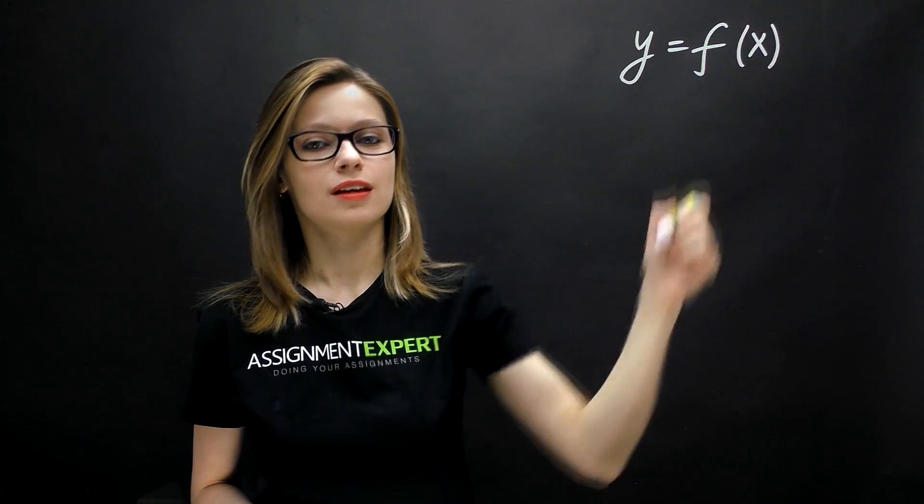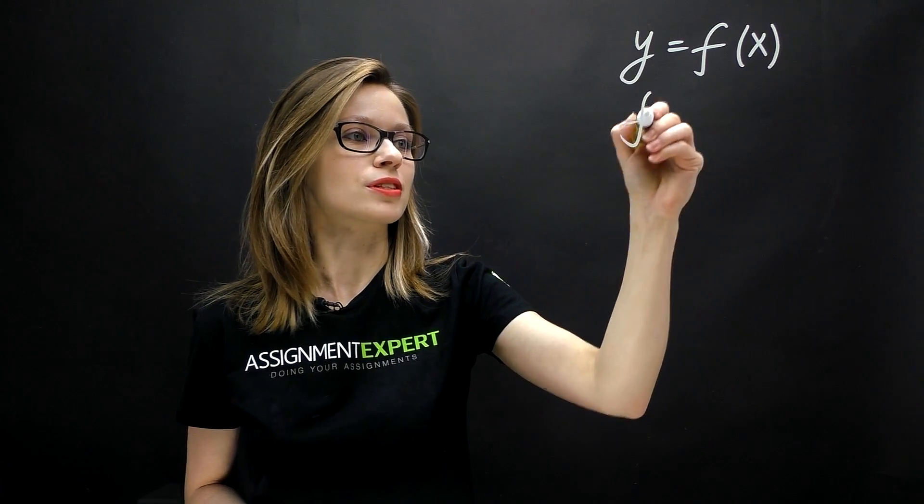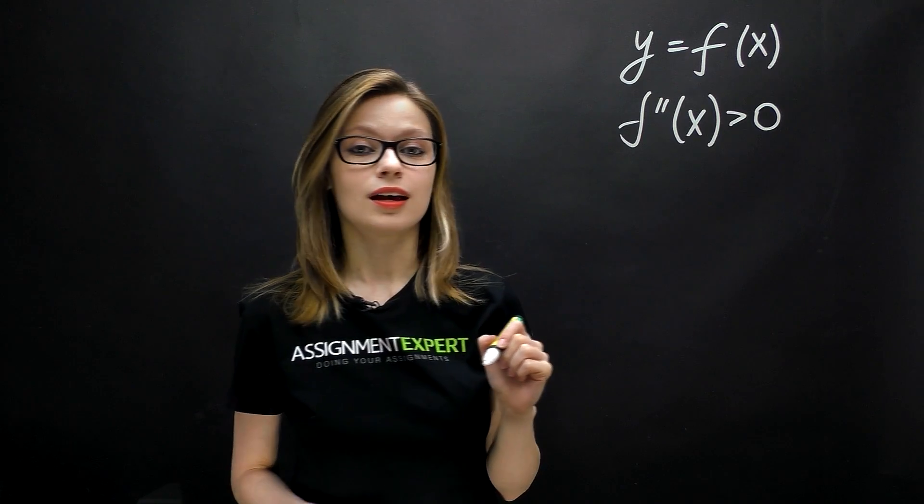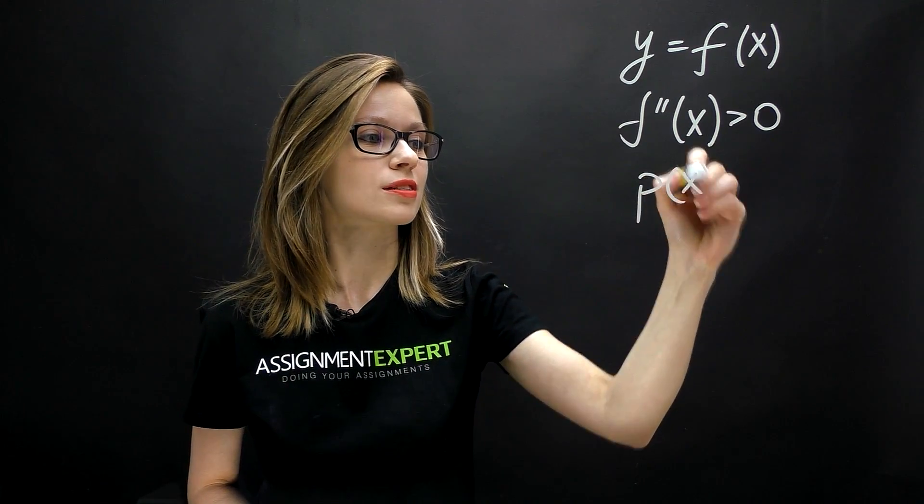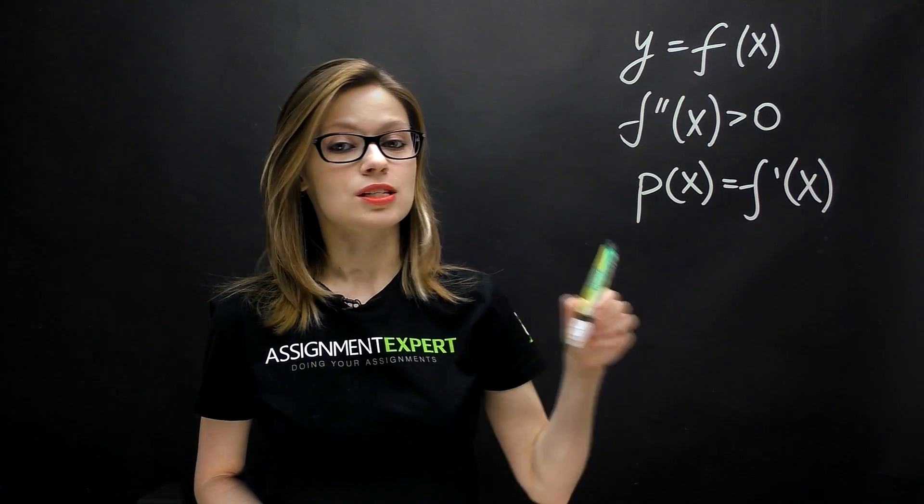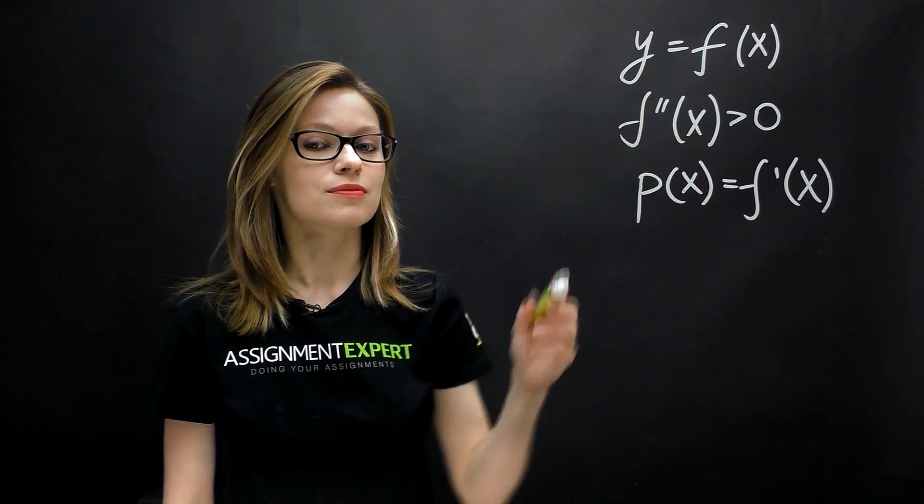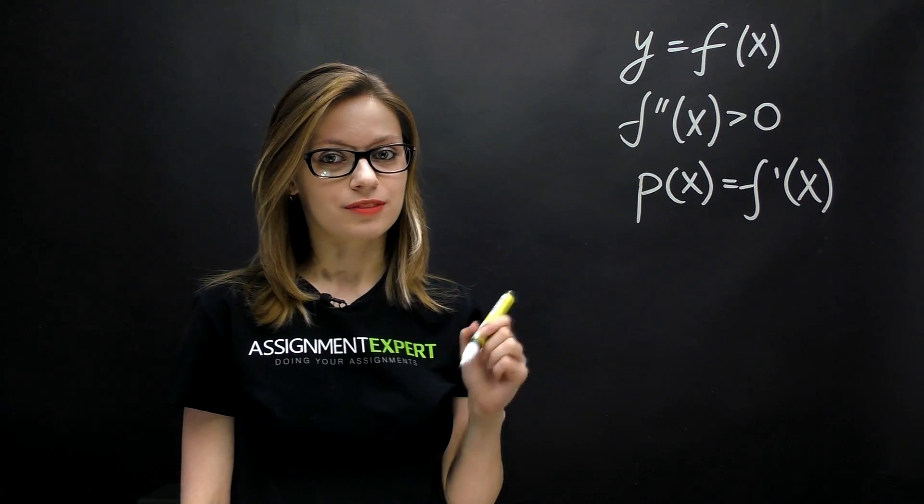Let's consider a convex function of one variable, y equals f of x. Due to its convexity we know that its second derivative is greater than zero. Another characteristic of this condition is that the slope of this function p of x, which is equal to f prime of x, is a strictly monotonic function of x. So if f double prime exists there is a single value of the slope p for each value of x and vice versa.